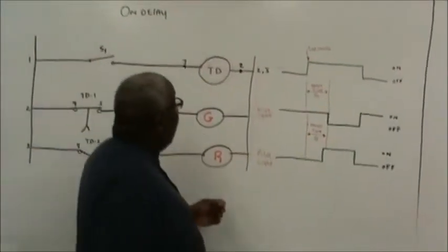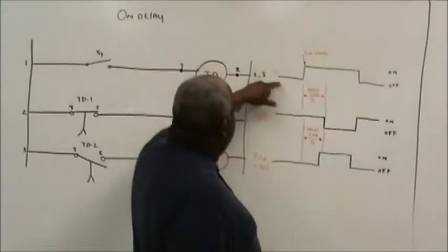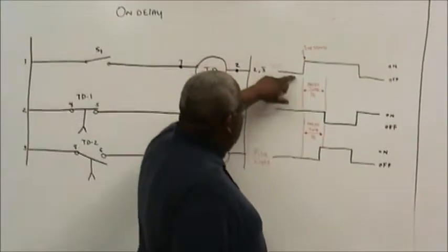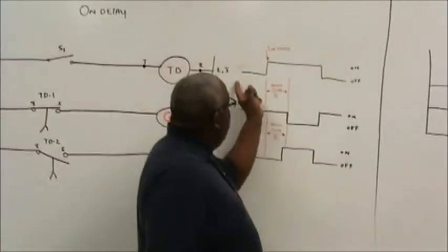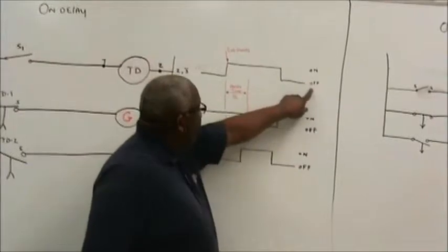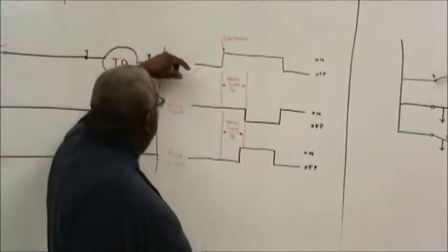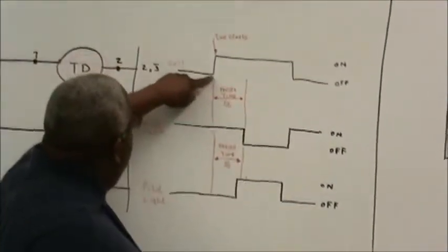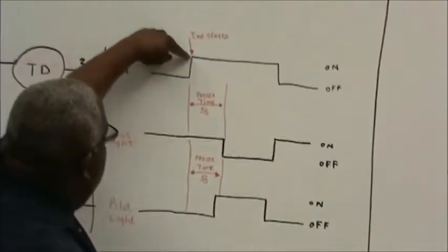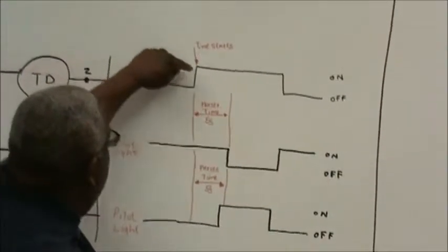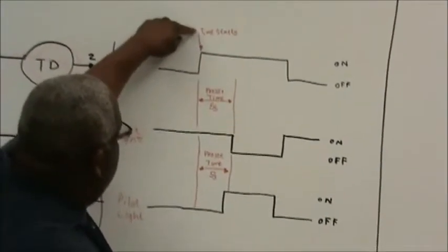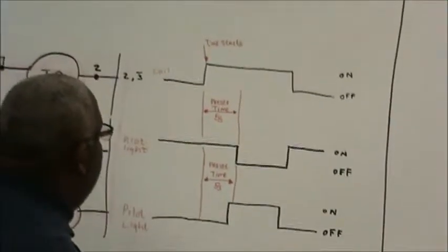The timing diagram says that in the de-energized state, my coil being de-energized, the line here says that it's off, and you see that at the point where I turn this switch on or energize the coil, that's when the timer starts timing for the on-delay timer.